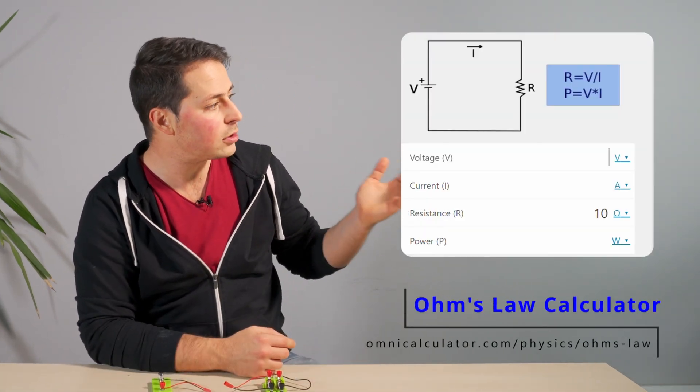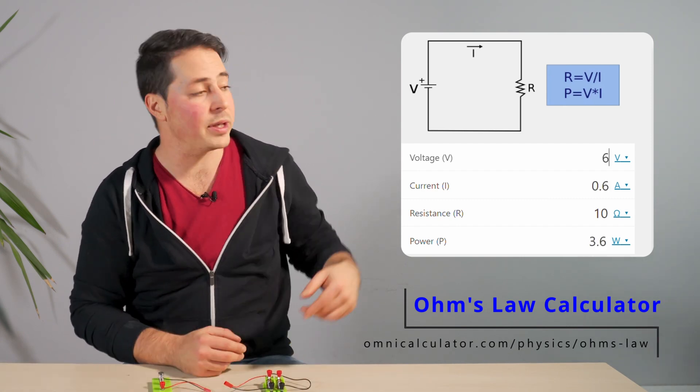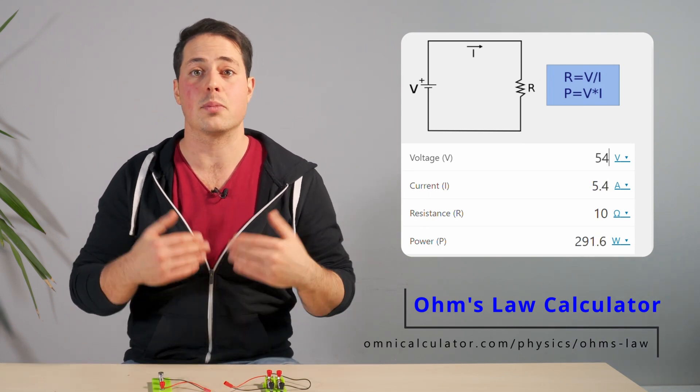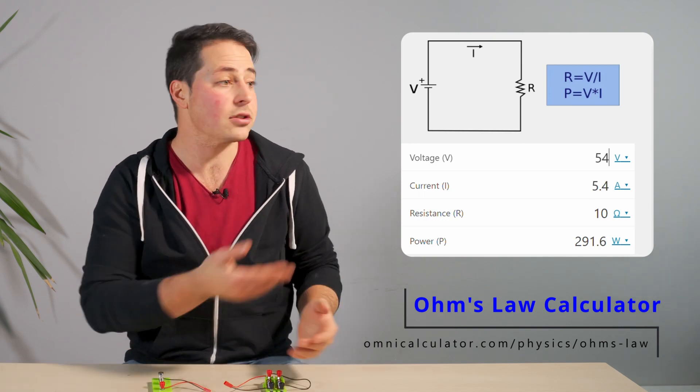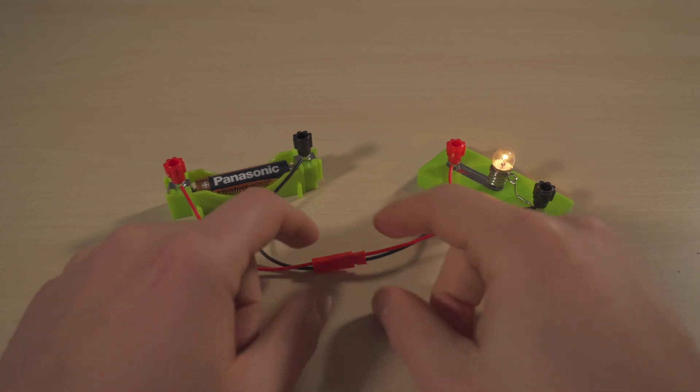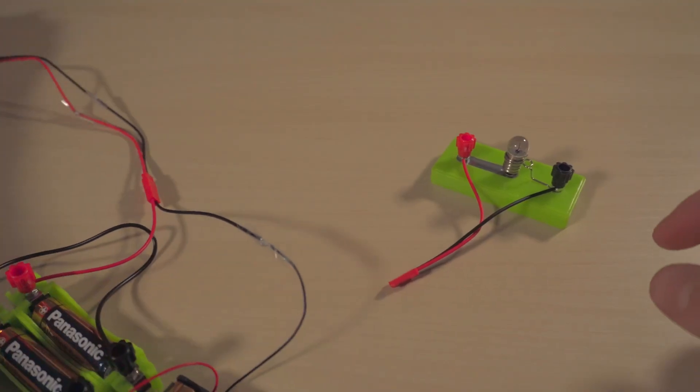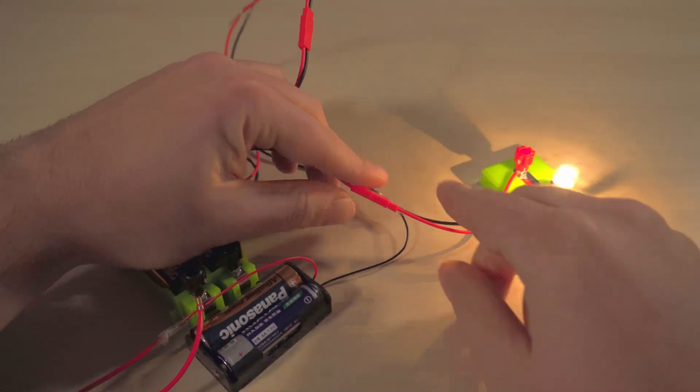If we measure the voltage and current going through an electrical component, we will see that as we increase the voltage, we also get more current. This increase is proportional with a constant factor, and this factor in our case is 10. The same principle holds true in reality. So if we change this puny battery for a bigger one, we are creating a bigger voltage difference, so we have more current, so the light shines brighter.